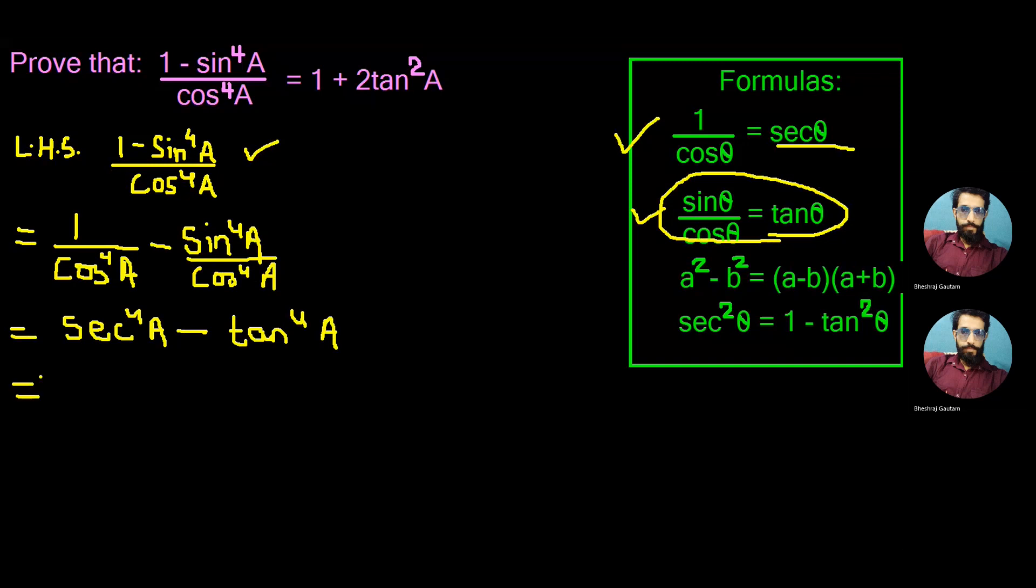Let's modify this as sec square A inside the bracket and square outside. 2 and 2 when multiplied gives power 4. In the same way, we change the second part to tan square A whole square.